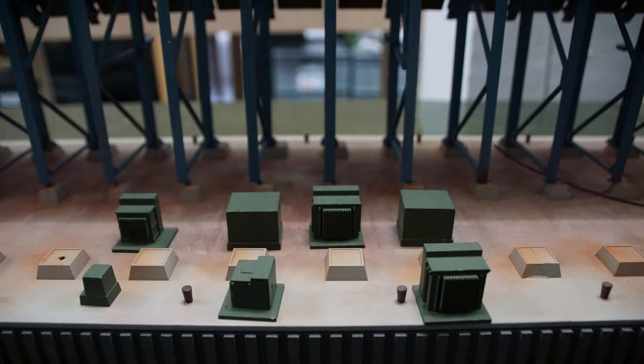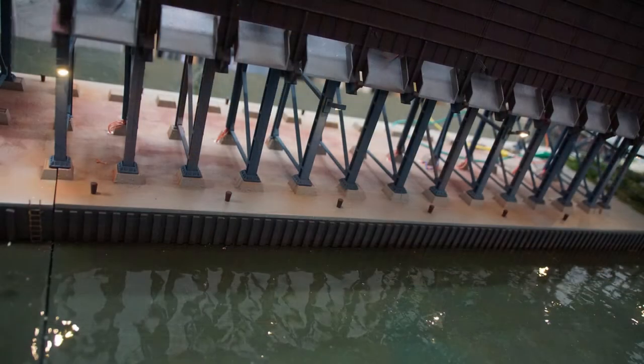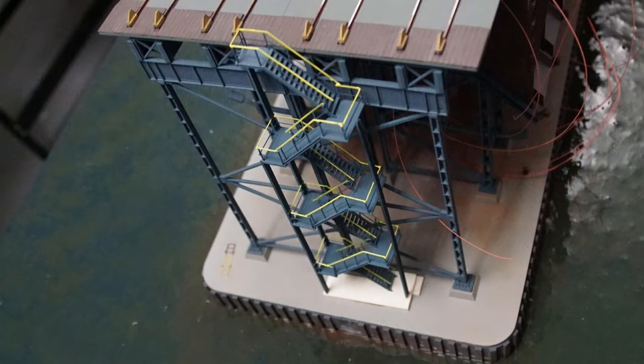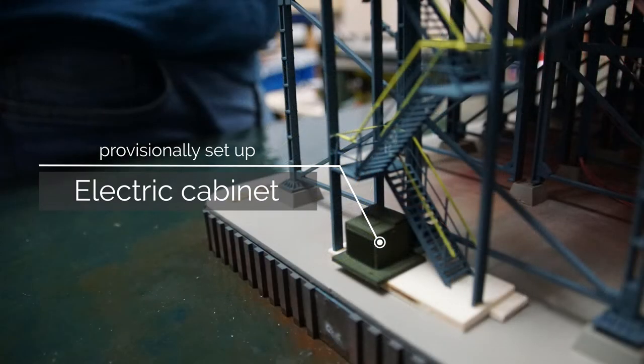At different places in the lower area, electric cabinets are planned. Here are some examples. We still have to see where exactly they will be placed. One electric cabinet will be placed below the stairs at the end of the dock. The other positions are not yet fixed.